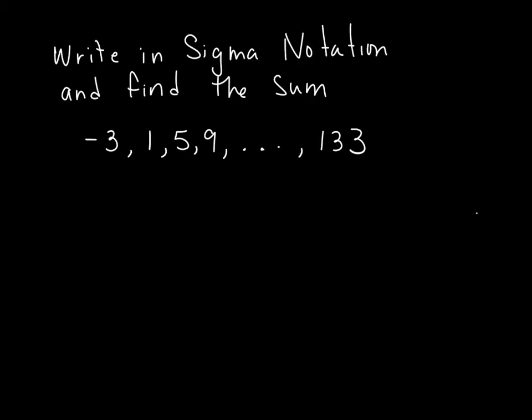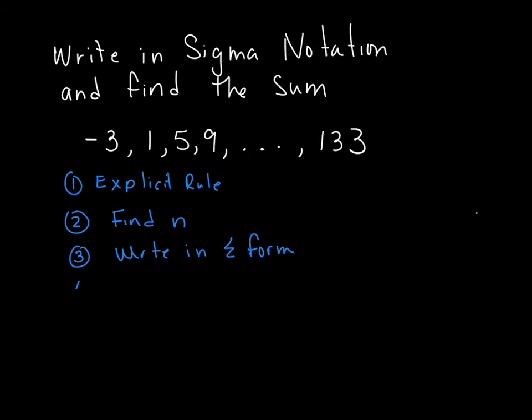So I'm asked to do the same thing. So this time I'm going to list the steps of what you want to do. So step 1, make sure you write the explicit rule. Step 2, find n. Step 3, write in sigma form. And then 4, find the sum. So if you want to push pause and try that now.